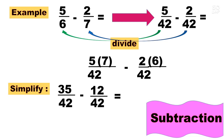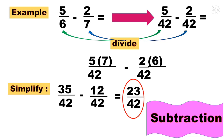Since they now have the same denominator, we subtract the numerators: 35 minus 12 is 23. Copy the common denominator 42. So now we have the final answer: 23 over 42. That is how to subtract similar fractions.